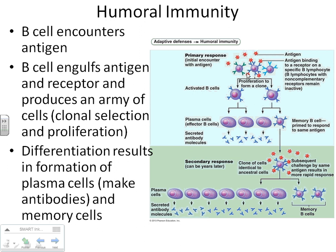Our B cells recognize the antigen already processed by the phagocytic cell, and then our B cells proliferate — meaning the B cell that can respond to that antigen starts dividing like crazy, creating tons of B cells that can fight it. Once enough are made, the B cell changes form and turns into two different types of cells: plasma cells and memory cells.